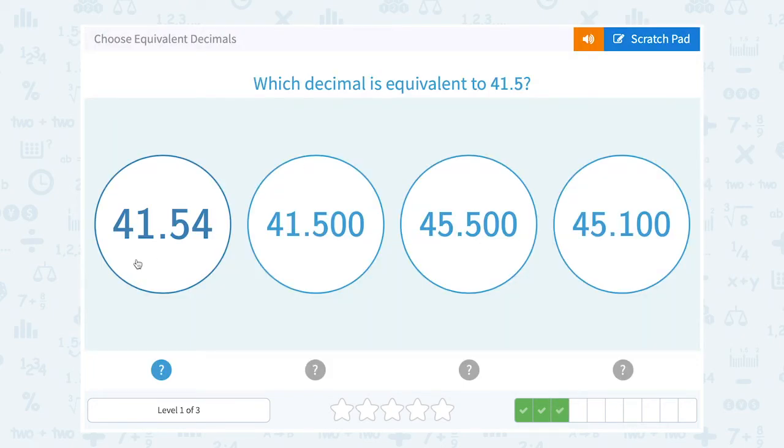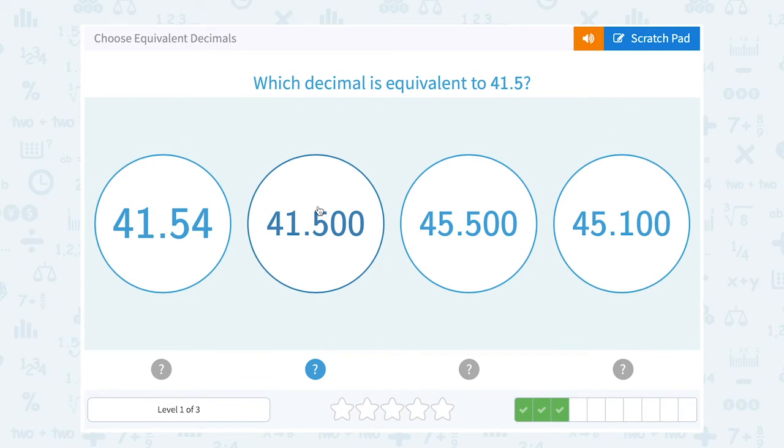Which decimal is equivalent to 41.5? I'm looking for something that's 41.5 with just some zeros on the end. So that would be this. Remember, adding those two zeros does not change our value. So those are equivalent.